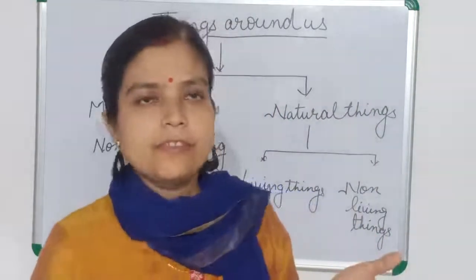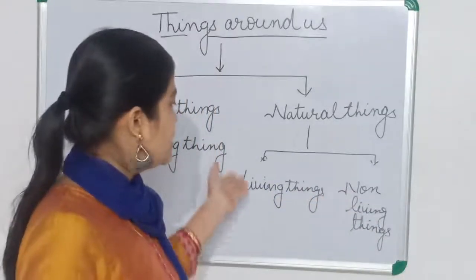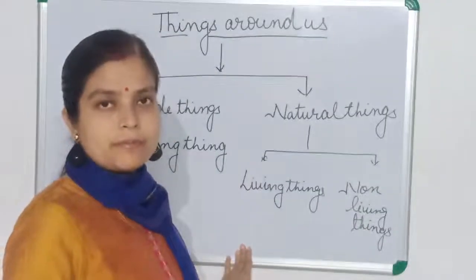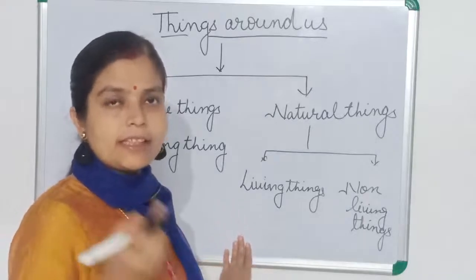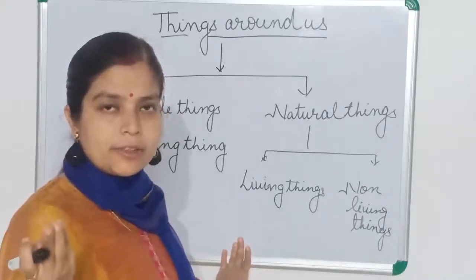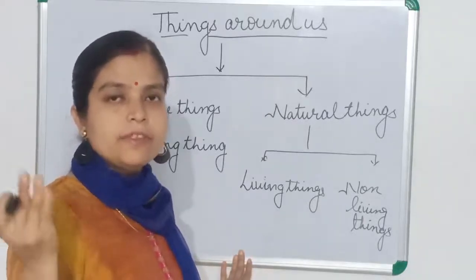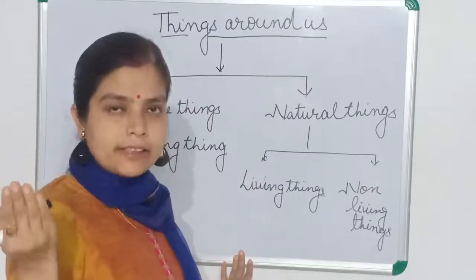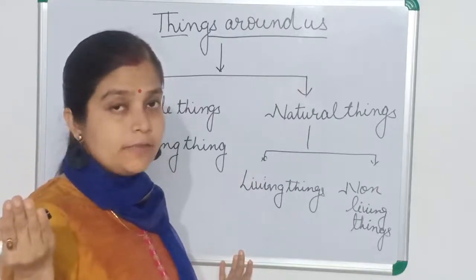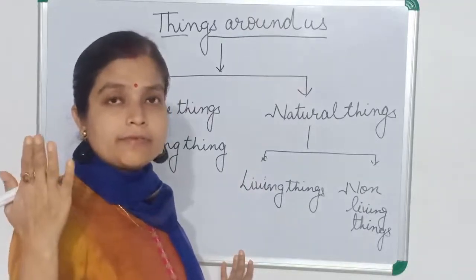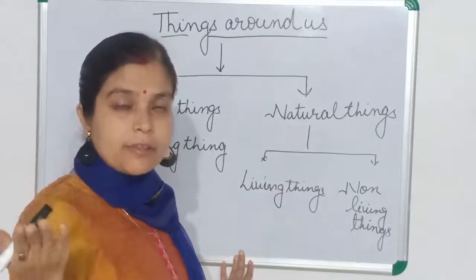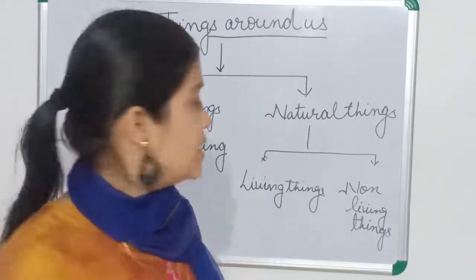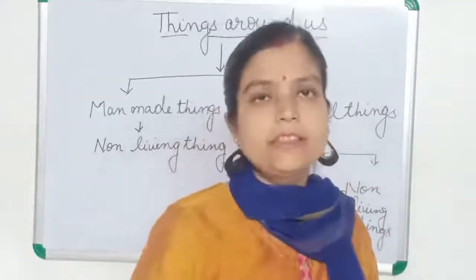So what is the difference between living things and non-living things? Living things have some characteristics: they can grow, they can move, they can feel, they need food, they can reproduce, and they can breathe. These are the characteristics of living things. Non-living things cannot do any of these things.